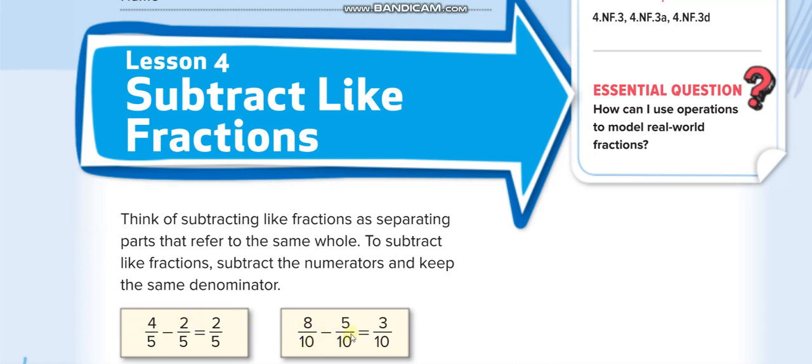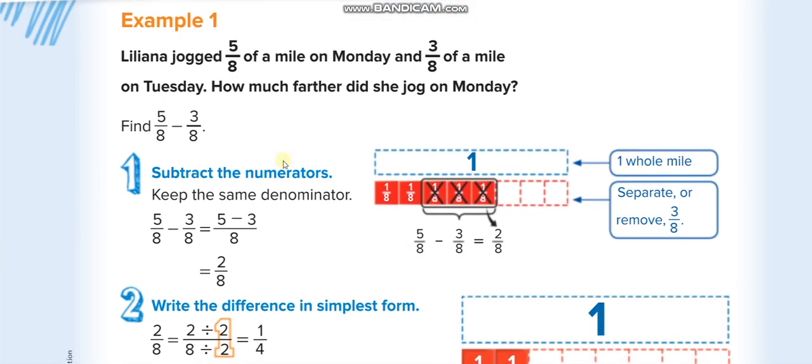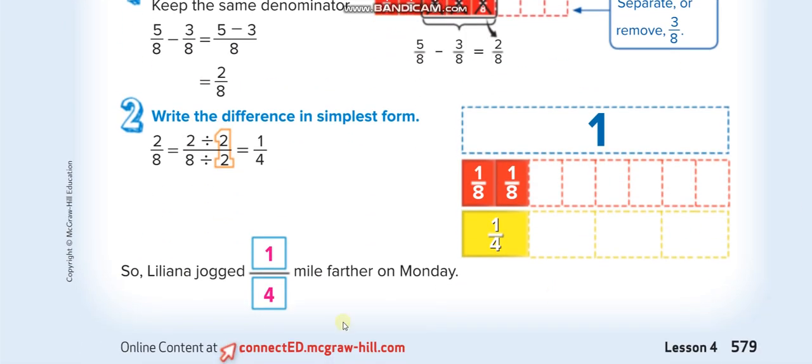Here 5 over 8 minus 3 over 8 is equal to 2 over 8. Now we can simplify this. We divide by 2 up and 2 down to simplify it. 2 divide 2 equals 1 and 8 divide 2 equals 4, so 1 over 4.